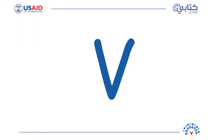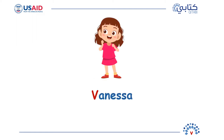Are you ready? What do you see? A girl. This girl's name is Vanessa. Can you see the V in Vanessa? Where is it? That's right! The V sound is at the beginning of the word. Do you see the capital V at the beginning of the word Vanessa? The capital V can only be at the beginning of words.